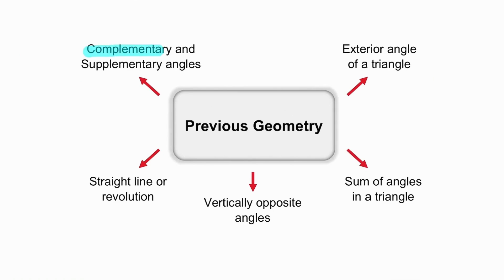Don't forget complementary angles, which add up to 90 degrees, and supplementary angles, which add up to 180 degrees. The sum of the angles on a straight line is 180 degrees, and the sum of the angles in a revolution is 360 degrees. Vertically opposite angles are equal. The sum of the angles in a triangle is 180 degrees, and the exterior angle of a triangle is equal to the sum of the two interior opposite angles. And do not forget all the properties of the quadrilaterals.